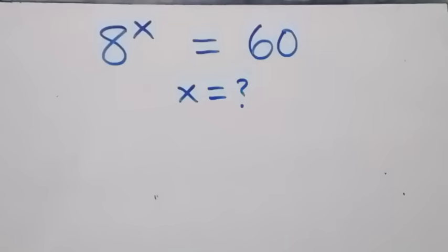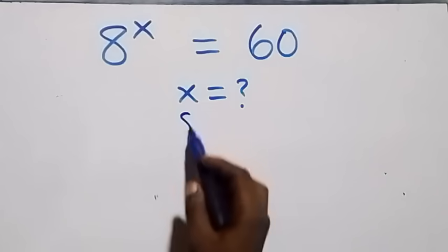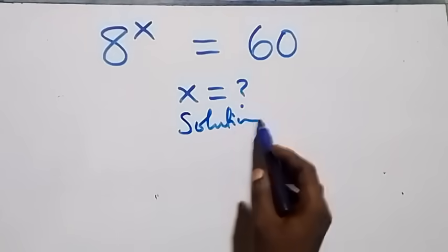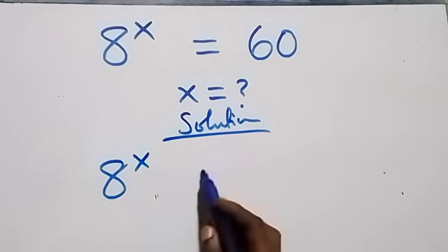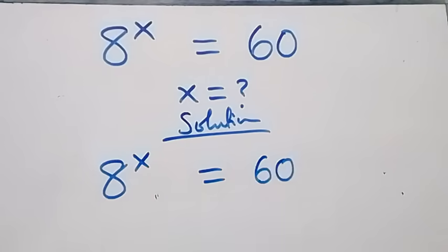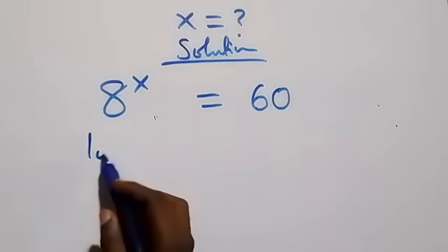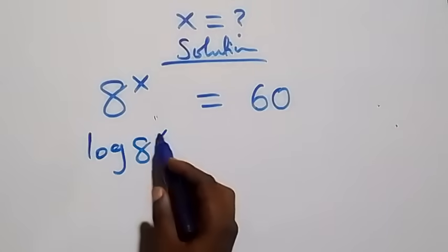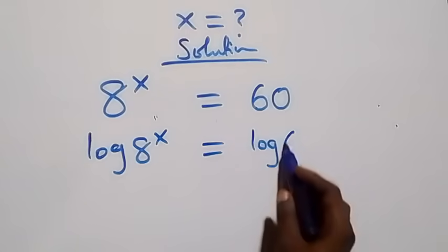Hello, welcome. Let's solve this exponential equation: 8 raised to the power x equals 60. We take the log on both sides, giving us log of 8 raised to power x equals log 60.